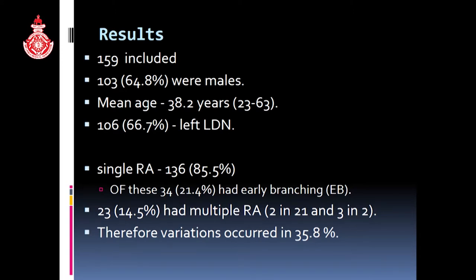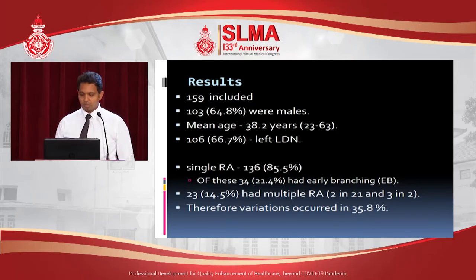Finally, 159 cases were included. Of these, 103 were males, mean age was 38.2 years, and 106 underwent left-side live donor nephrectomy. Patients with a single renal artery numbered 136 cases, of which 34 had early branching. 23 cases, which is 14.5%, had multiple renal arteries — 2 arteries in 21 cases and 3 in 2 cases. Therefore, variations occurred in 35.8%.